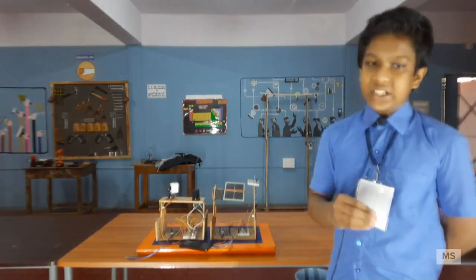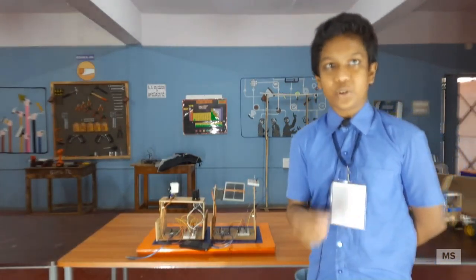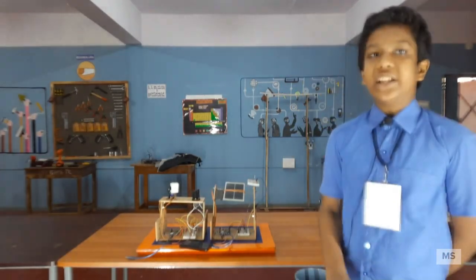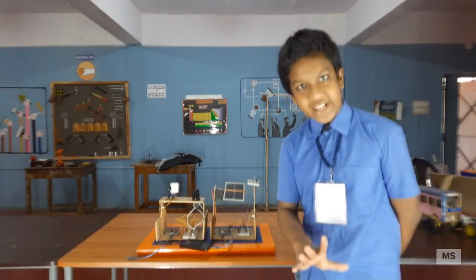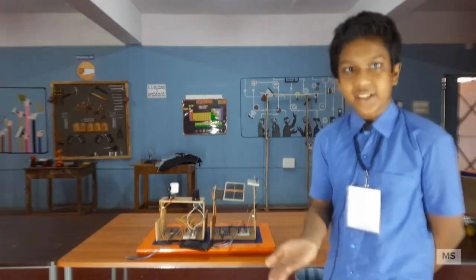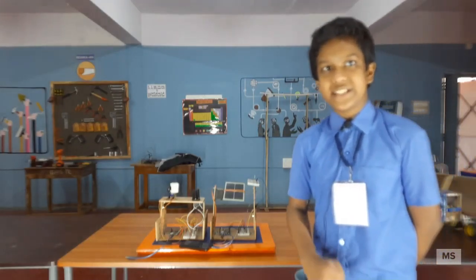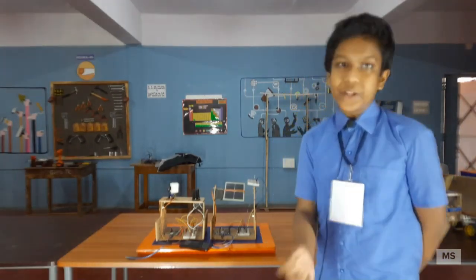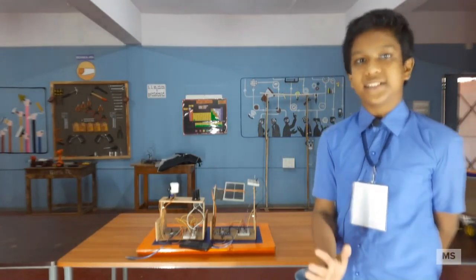And next, the working principle of this project is a solar tracker. Solar tracker is a mechanism or a machine which orients payload. What is the payload here? The solar panels, reflectors, lens, other payload, which orients the payload towards the sun.